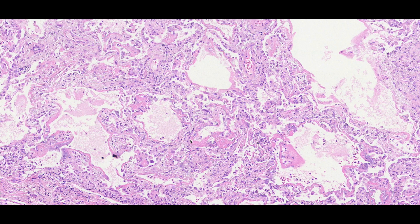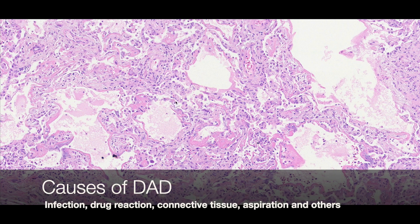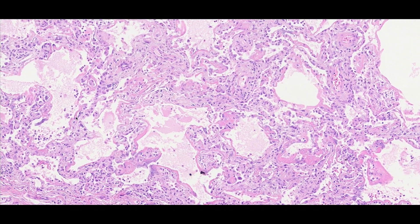Diffuse alveolar damage is the classic way in which the lung responds to injury. It can be caused by a number of things, including infection, drug exposures, aspiration, radiation, inhalation of noxious compounds, connective tissue disease, and as an acute exacerbation of underlying lung disease. The injury is triggered by damage to the alveolar lining cells — the type 1 pneumocytes — which are injured by the injurious process, whether it's an infectious agent or an inhalational injury.